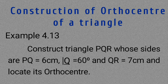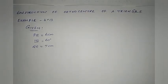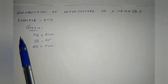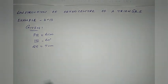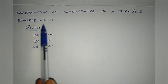Construct Triangle PQR whose sides are PQ equal to 6cm, angle Q equal to 60 degrees and QR equal to 7cm, and locate its Orthocenter. The given measurements are noted for Example No. 4.13.